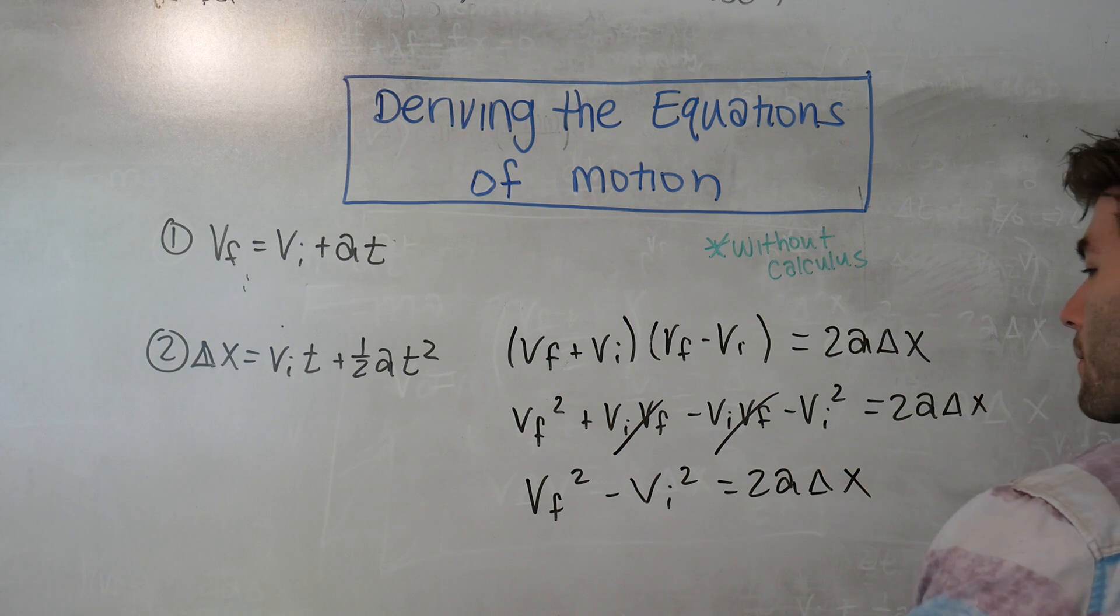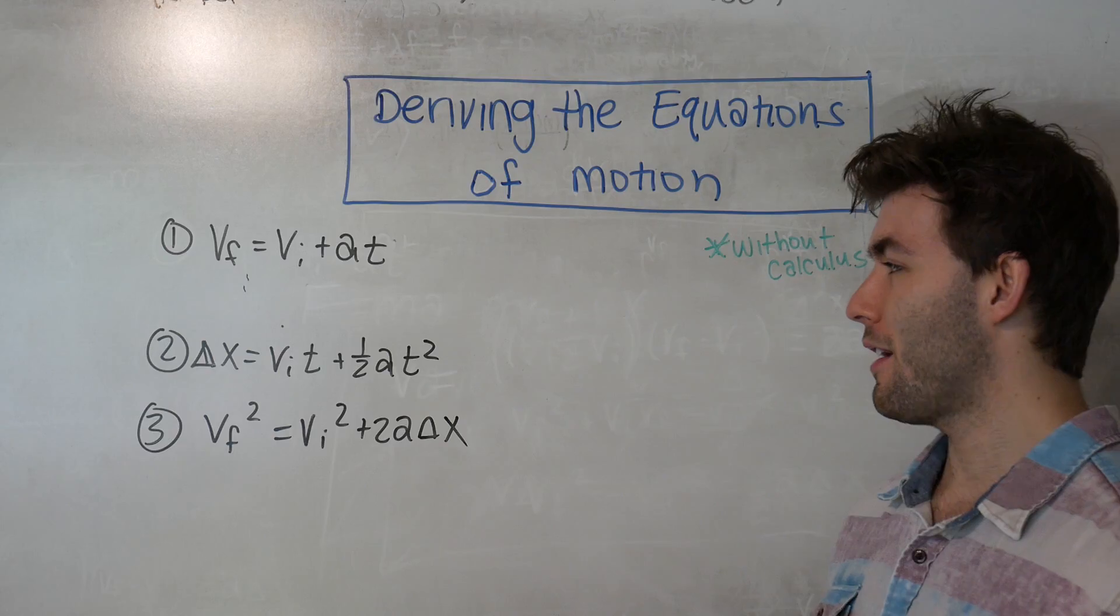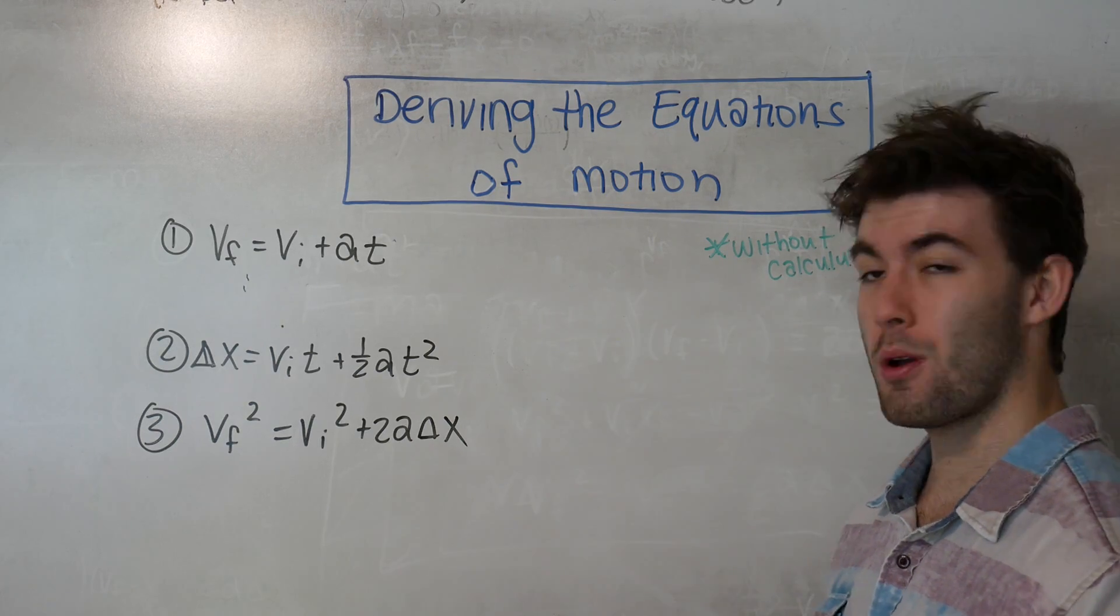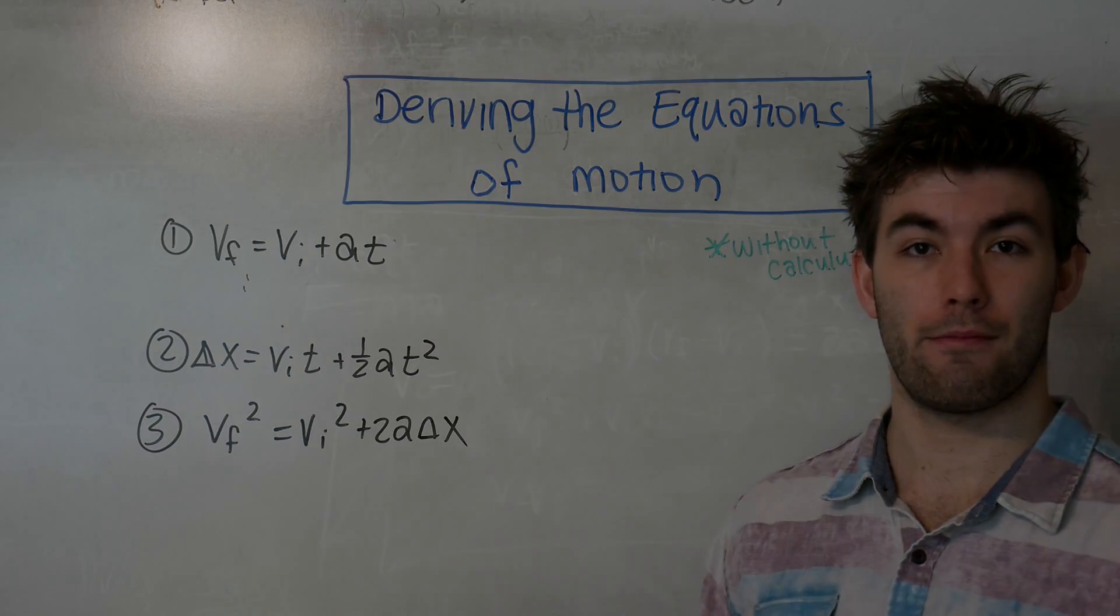Adding this term to the right-hand side of the equation will give us the final equation of motion. And there you have the three equations of motion derived using nothing but algebra. Hope you guys found this one helpful, and I'll see you next time.